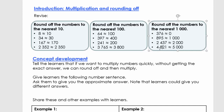For 4,821, between which two thousands will we find this number? It's between 4,000 and 5,000. Is it closer to 4,000 or 5,000? It's closer to 5,000 because of the 800. So 4,821 rounded off to the nearest thousand is equal to 5,000.